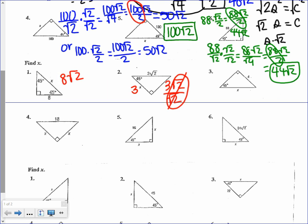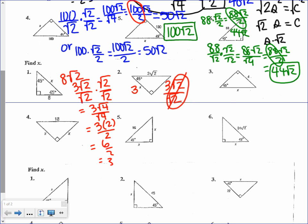If you didn't notice the cancellation, rationalizing still works: multiply by √2 over √2 and you get 3 times √4 over √4, which is 3 times 2 over 2, giving 6 over 2, which is 3. Alternatively, 3√2 times √2 over 2 gives 3 times √4 over 2, and √4 is 2, so 6 over 2 equals 3. Any of those options work.